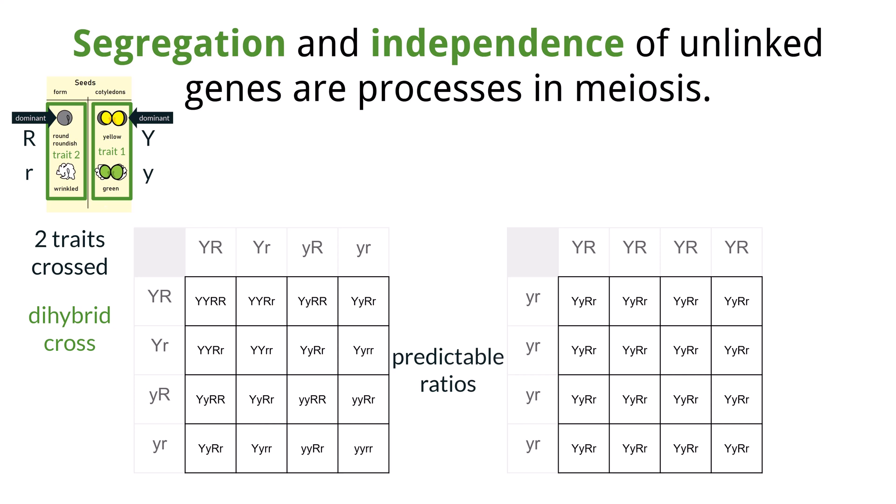The Punnett grid here shows the cross of two parents, both heterozygous for both traits: uppercase Y, lowercase y, uppercase R, lowercase r.